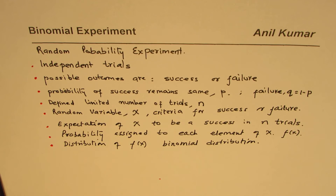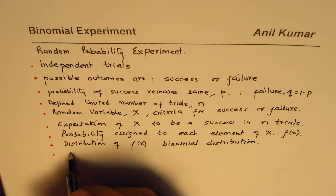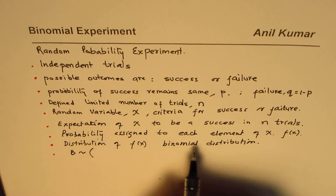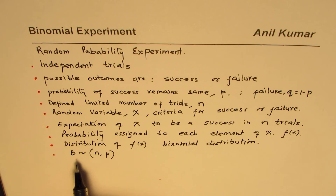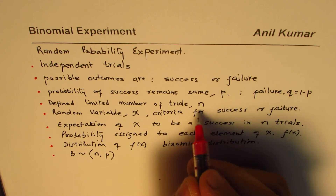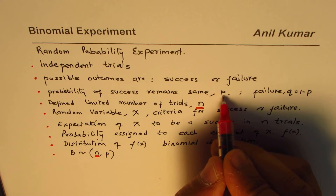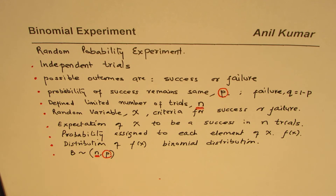At times we write the binomial distribution like B(n, p), where in brackets we write n comma p. This indicates that the experiment performed has an outcome that is a binomial experiment with n number of trials and in each trial the probability of success is p.